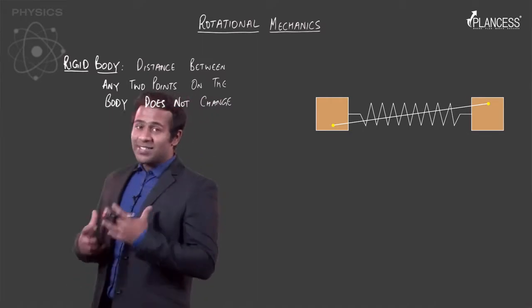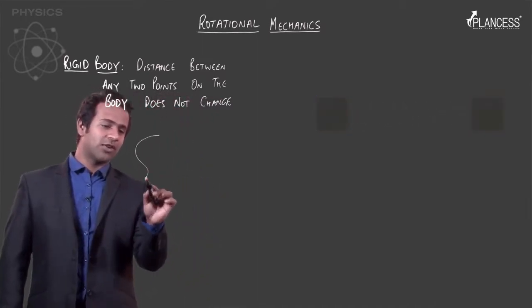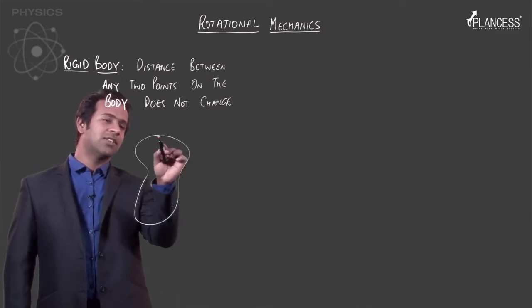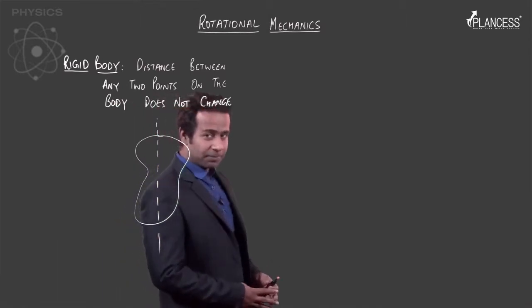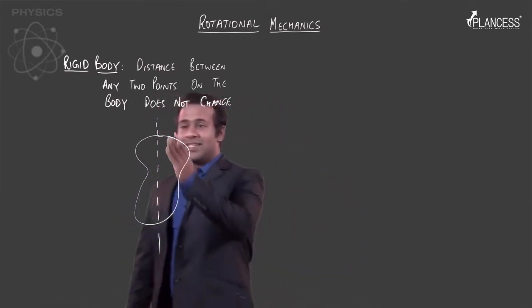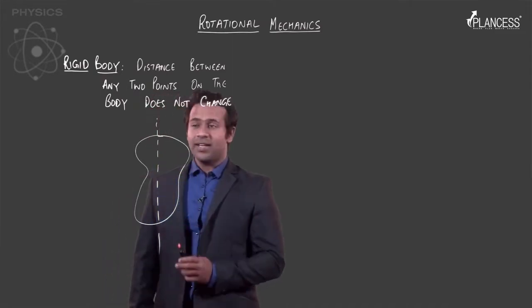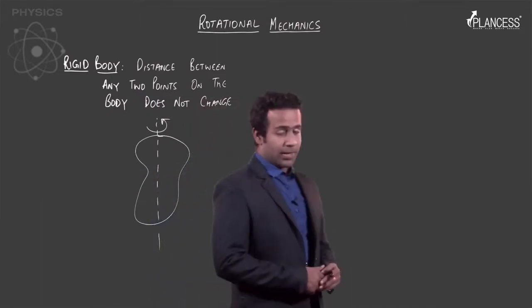So in a rigid body, since the distance would not change, let's see what the consequences of this assumption would be. What I have drawn here is a perfectly rigid body. I will assume that this line is the line around which this body is rotating.